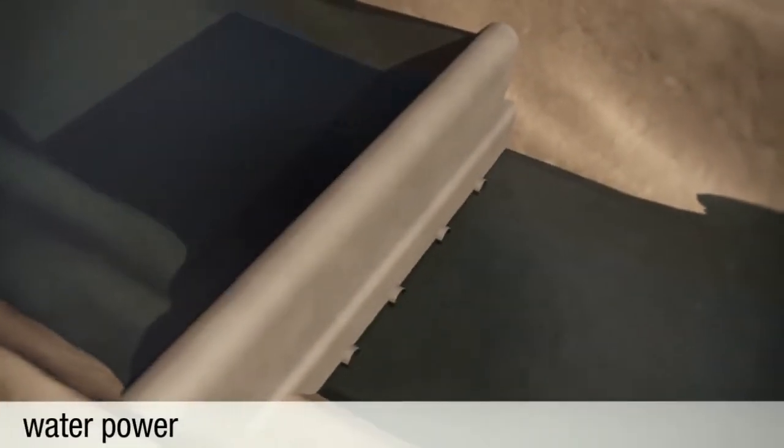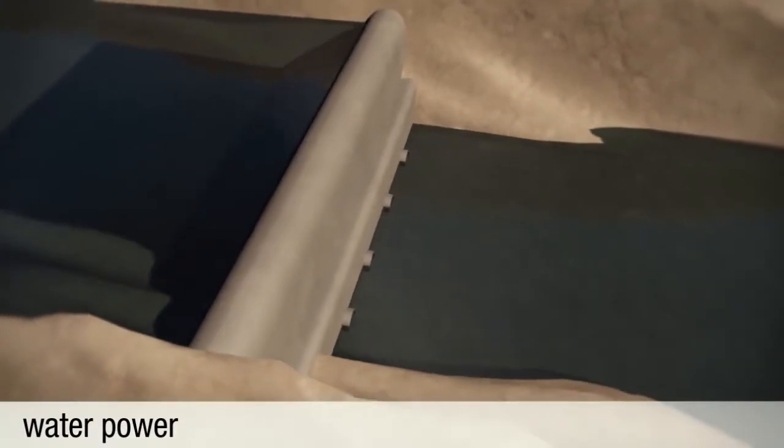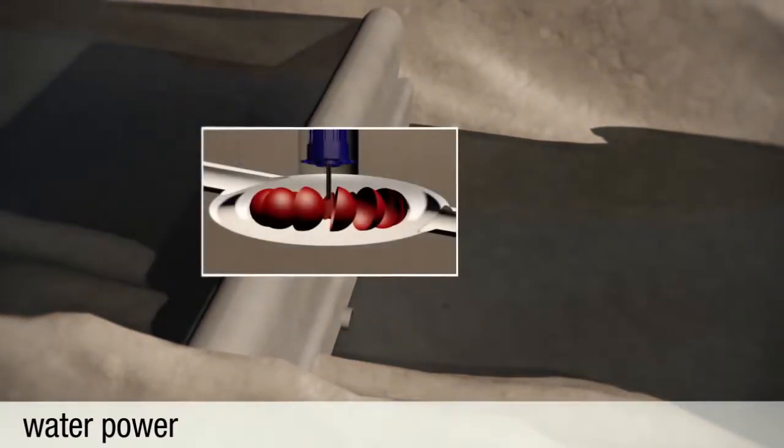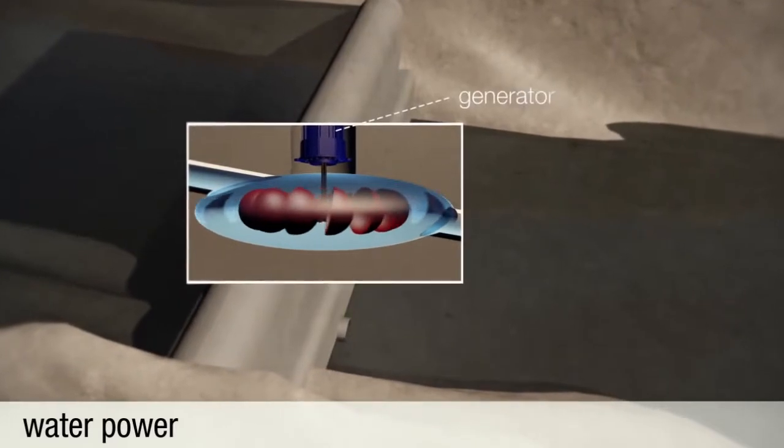Similar to wind power, in hydroelectric power stations, kinetic energy drives a generator which produces electricity. Wave and tidal power plants use the natural movement of the sea.